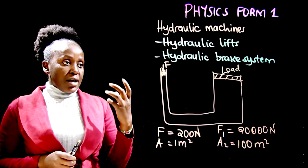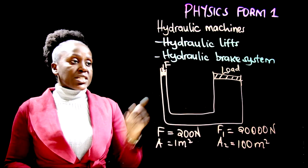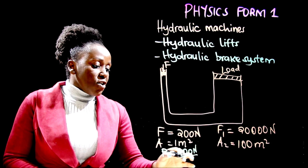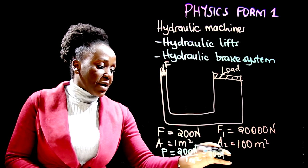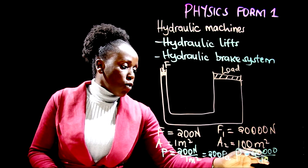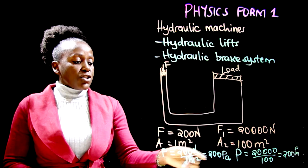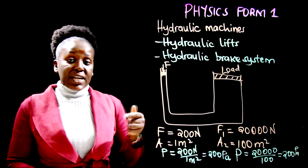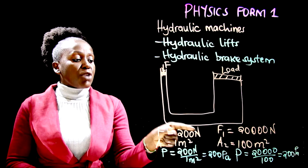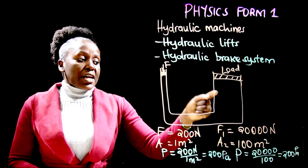Notice that we are playing with the area. If you calculate the pressure on the smaller side — force over area, 200 newtons over 1 meter squared — that equals 200 pascals. On the bigger side, 20,000 newtons over 100 meters squared also equals 200 pascals. So it is possible to create pressure by applying a small force on a small area, have that pressure transmitted all the way to the other side, and raise the load.